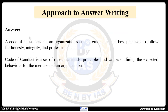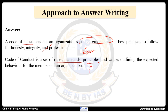In the answer, first we will write about code of ethics — it is a set of organizational ethical guidelines and best practices to follow, such as honesty, integrity, and professionalism. Then coming to code of conduct, it is a set of rules, standards, and principles. Simply put, code of ethics is all about ideal behavior — it is a guideline for ideal behavior and what is expected being part of an organization. Code of conduct has strict rules, standards, and principles that may vary from organization to organization or member to member.